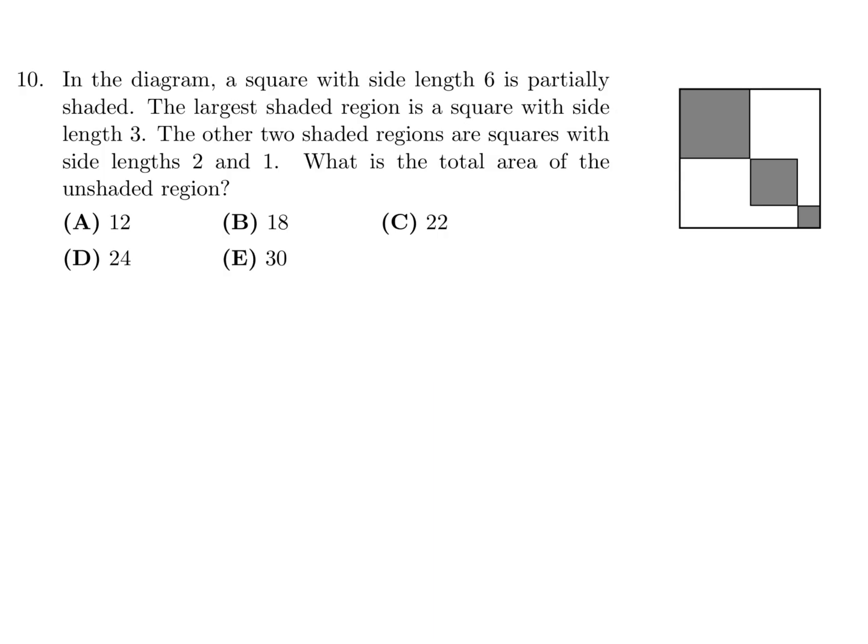In the diagram, a square with side length 6 is partially shaded. The largest shaded region is a square with side length 3. The other two shaded regions are squares with side lengths 2 and 1. What is the total area of the unshaded region?